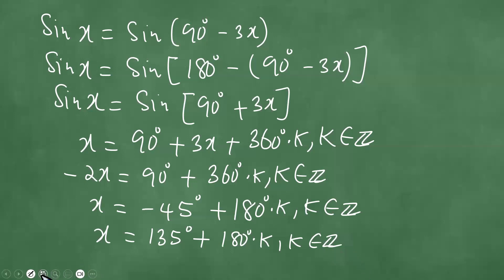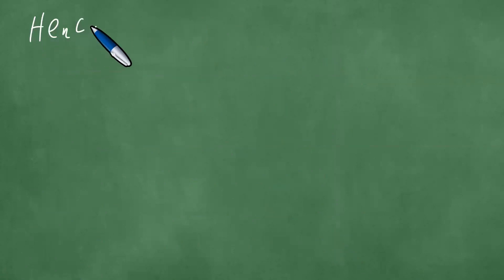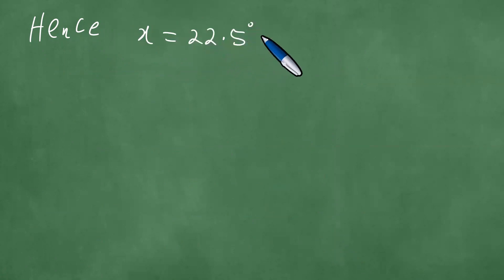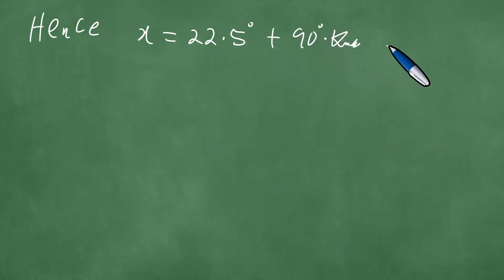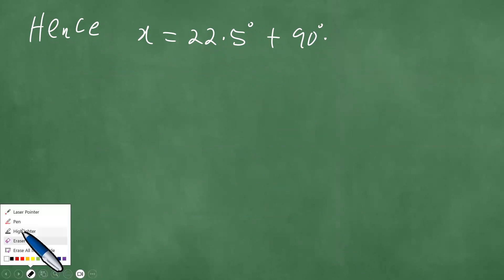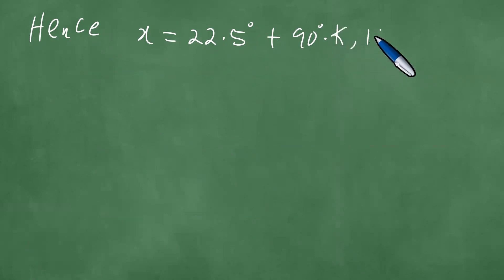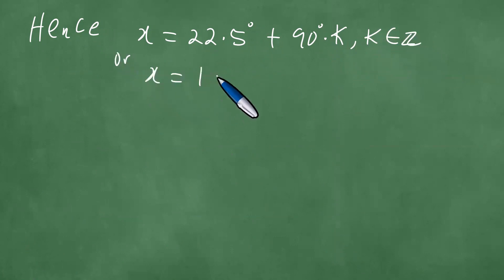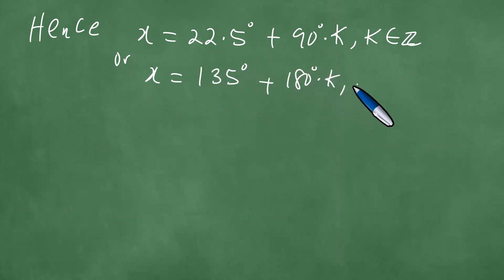So we have those solutions. Hence, x equals 22.5 degrees plus 90 degrees times k, where k is an element of the set of integers, or x equals 135 degrees plus 180 degrees times k, where k is an element of the set of integers.